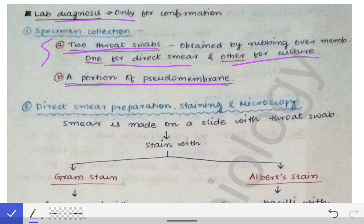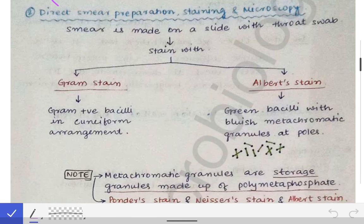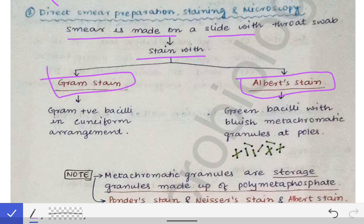After specimen collection, we go for direct smear preparation, staining, and microscopy. A smear is made on a slide with the throat swab and stained with the Gram stain and the Albert stain. When stained with the Gram stain and viewed under the microscope, we find Gram-positive bacilli in a uniform arrangement or the Chinese letter arrangement.